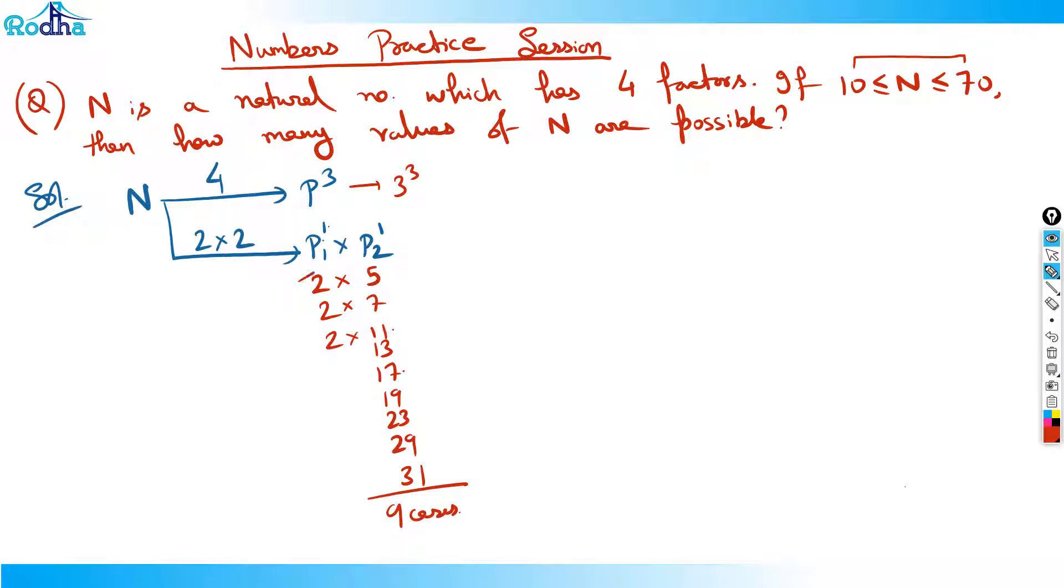We started off with 2 actually. Now I can move with 3 also. If we move with 3, start off with 3, now 3 into 5, 3 into 7, look for all the prime numbers, 3 into 11, 3 into 13, which we have to stop before 17. 3 into 17 is 51, 3 into 19 is 57, and 3 into 23 is 69. So I think till here I can take 3 plus 4, 7 cases here.